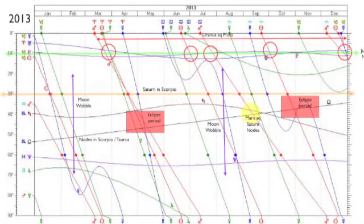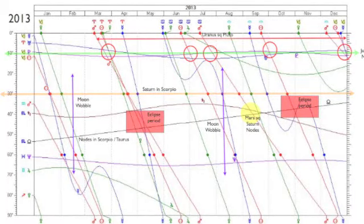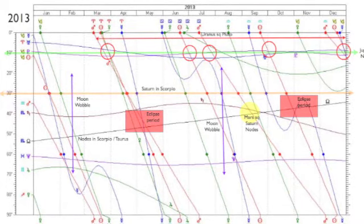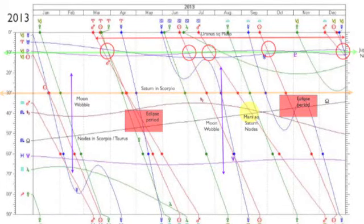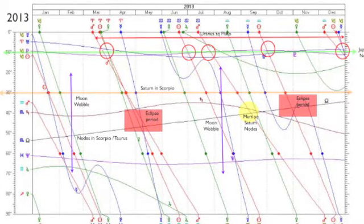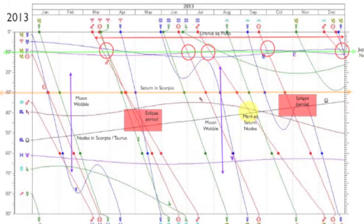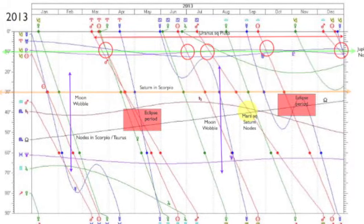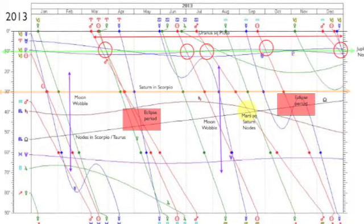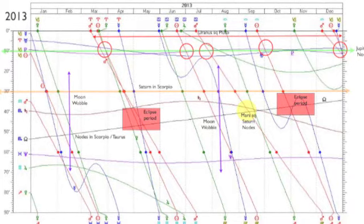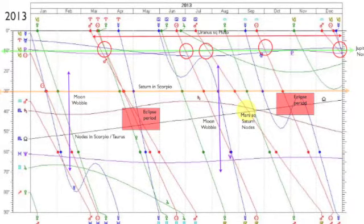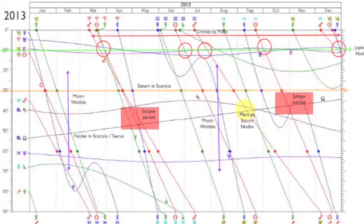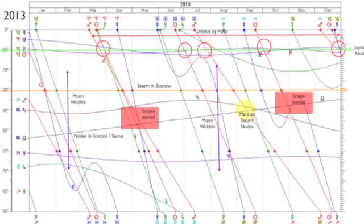This is a quick review of the year chart for 2013 so that you can see the kind of activity. Please note the red square, which is the eclipse period that we've just been through — that wound up being quite intense. And now we're going through a long Uranus square Pluto that goes from March to the end of the year.